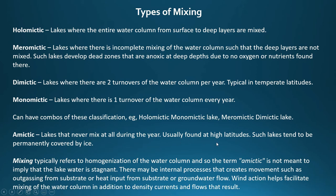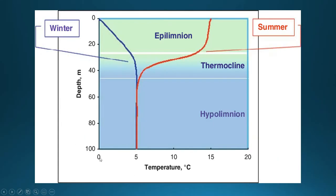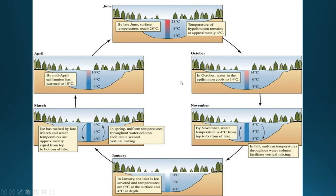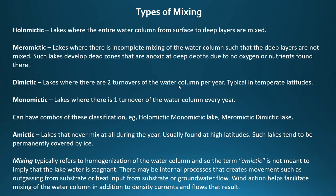Amictic lakes never mix at all during a year — typically found at high latitudes, permanently covered by ice. A note: this refers to homogenization of the water column. Amictic doesn't mean the lake water is stagnant — there may be internal processes like seepage from the substrate or groundwater — but there is no density-driven major circulation. When we look at vertical mixing, whether the water column is cooling or warming, these are density-driven vertical circulations. Wind action may also facilitate mixing, but when we talk about mixing, we're usually referring to density-driven situations producing homogenization of the water column.